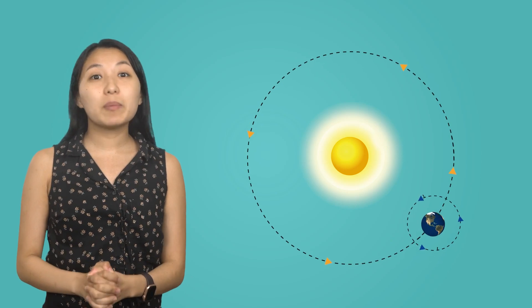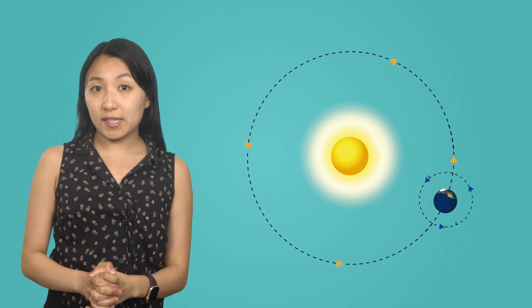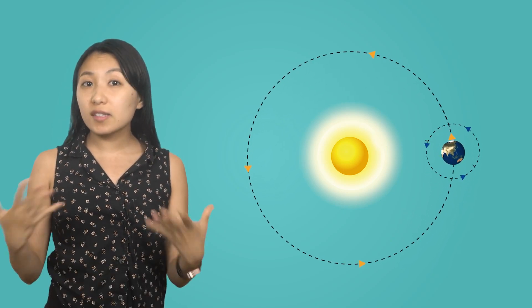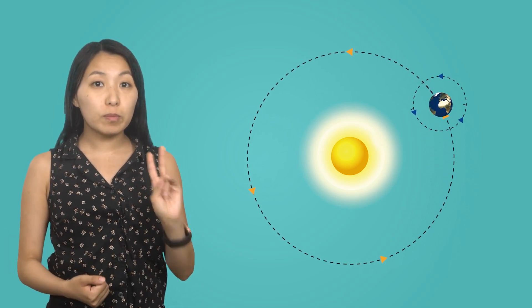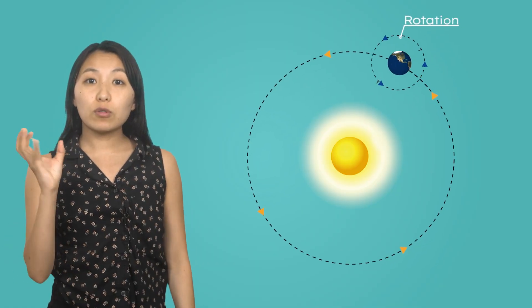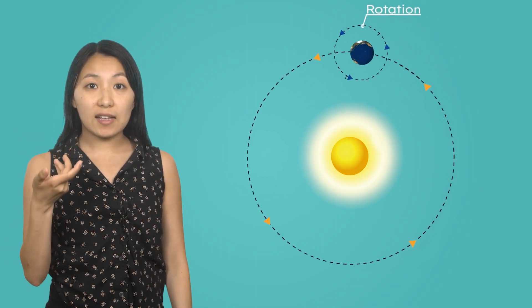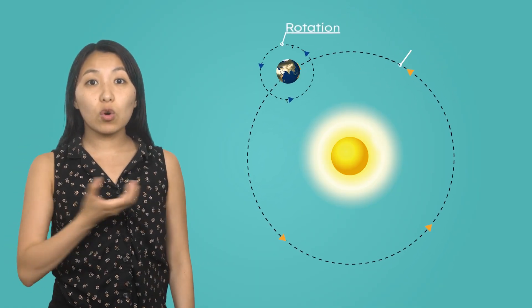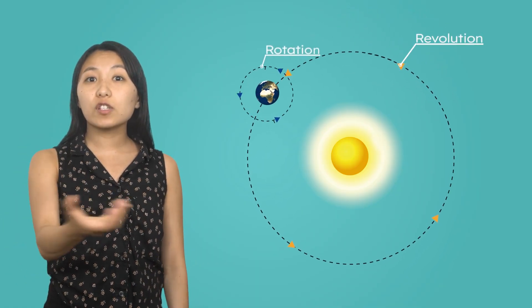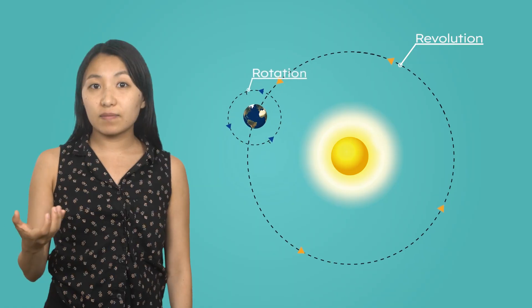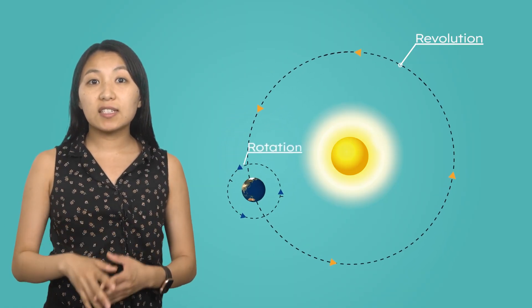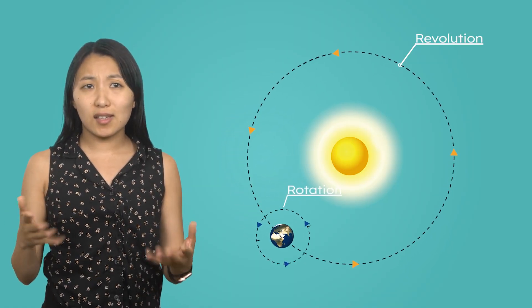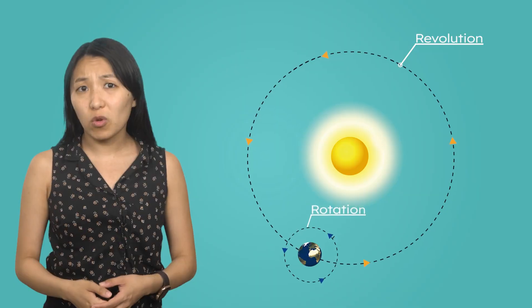Before we dive in, let's understand a bit about Earth's movements. Earth is constantly moving through space in two main ways: it rotates on its axis and orbits, or revolves, around the sun. These movements are key to understanding day and night, seasons, and so much more.